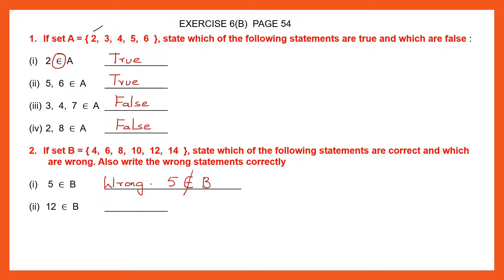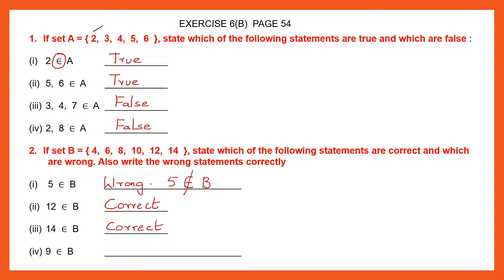Question 2: 12 belongs to B? Yes, 12 belongs to B. So that statement is correct. Third one: 14 belongs to set B? Yes, 14 does belong to B. So that statement is also correct. Fourth one: 9 belongs to set B? No, 9 is not there. So that statement is wrong. We write 'wrong' and say 9 does not belong to set B.